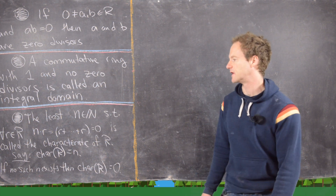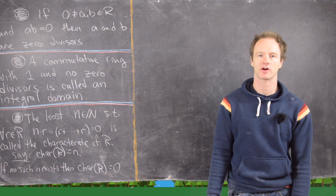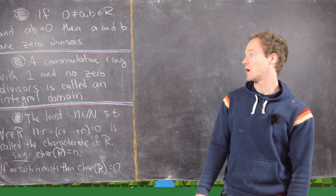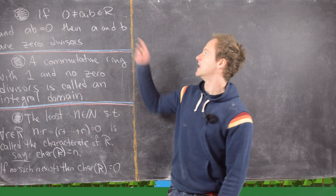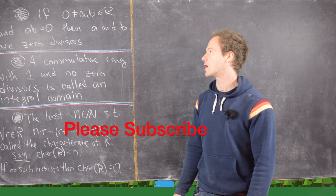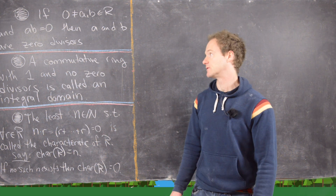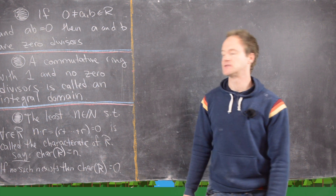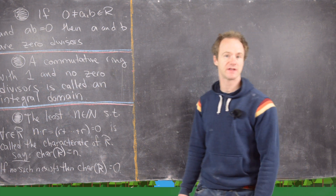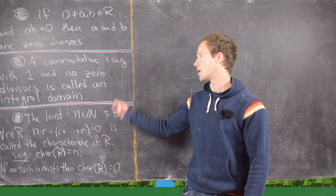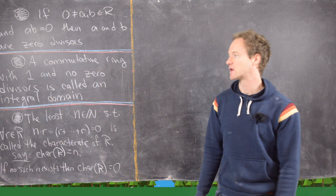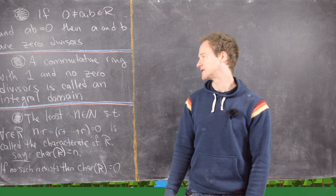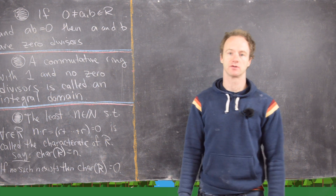In this video we want to look at the notion of the characteristic of a ring. Before we do that, let's recall a couple of definitions. If A and B are in R and neither of them are zero, but their product is zero, then A and B are called zero divisors of R. The second definition is that if we have a commutative ring with one and no zero divisors, then it is called an integral domain.